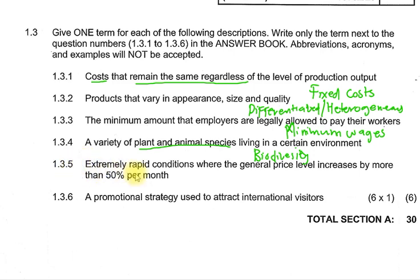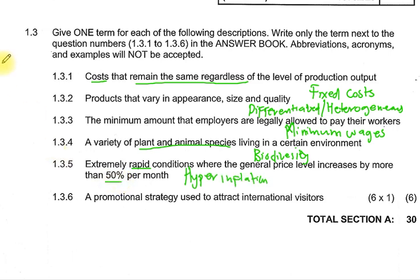Question 1.3.5: Extremely rapid conditions where the general price level increases by more than 50%. The keyword is that prices change too much — to a point exceeding 50%. So in this case, this is hyperinflation.